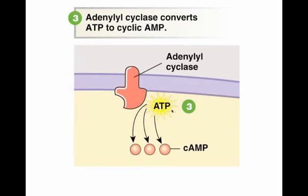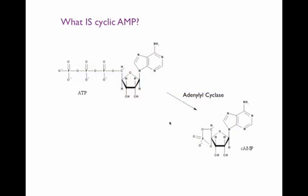Here's how adenylyl cyclase makes cyclic AMP. It takes ATPs, and instead of pulling just one phosphate off ATP to make ADP, it takes two phosphates off. Two phosphates removed from adenosine triphosphate leaves you with adenosine monophosphate — that's what the M stands for. The little C stands for cyclic, which refers to its ring shape. So in the presence of adenylyl cyclase, the terminal two phosphates get stripped off, leaving adenosine monophosphate in a cyclic ring form. That's where it gets the name cyclic AMP — also pronounced CAMP. This is the second messenger.